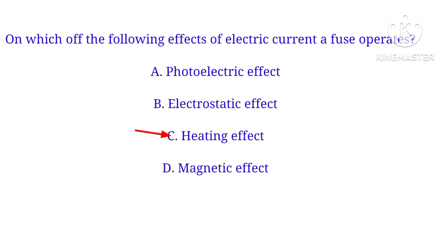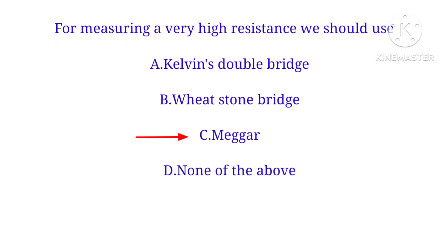Which of the following effects of electric current causes a fuse to operate? A fuse operates on the heating effect. When excess current flows, heating increases and the fuse operates due to the heating effect.